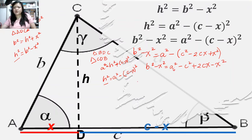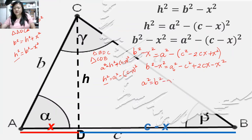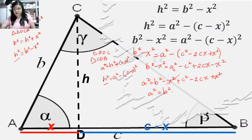When we solve for A squared, we add the inverse of all terms aside from A squared. So we have A squared equal to B squared minus X squared plus C squared minus 2CX plus X squared. Combining similar terms, negative X squared and positive X squared give us zero. Therefore, A squared is equal to B squared plus C squared minus 2CX.